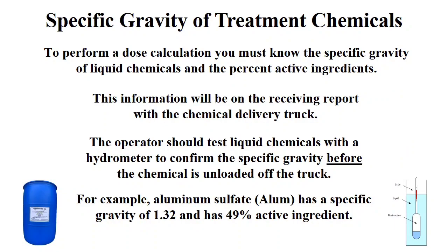In a form of dose calculation, you must know the specific gravity of the liquid chemical and the percent active ingredient. In each chemical delivery, the truck driver should give the plant operator a receiving report with this information. The operator should test the chemical on every delivery with a hydrometer to confirm the specific gravity before the chemical is unloaded off the truck.